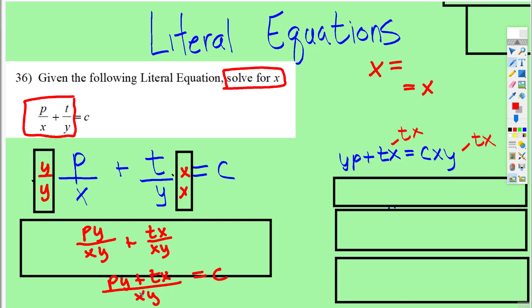So then to get rid of this denominator, I just have to multiply both sides by xy. And once I do that, so see what we have here? We have py plus tx is equal to cxy.